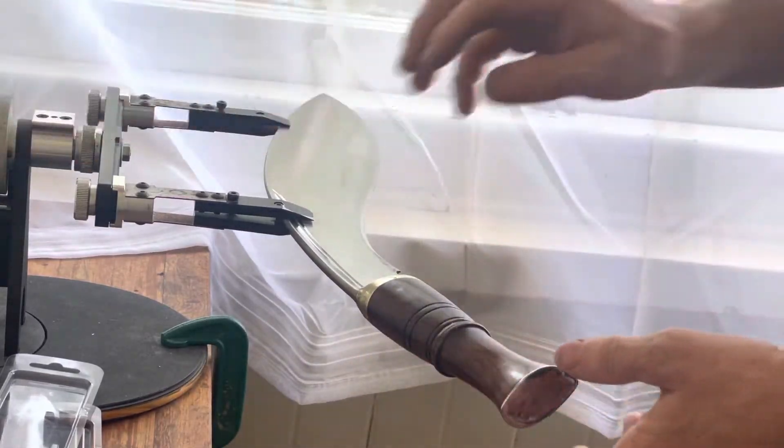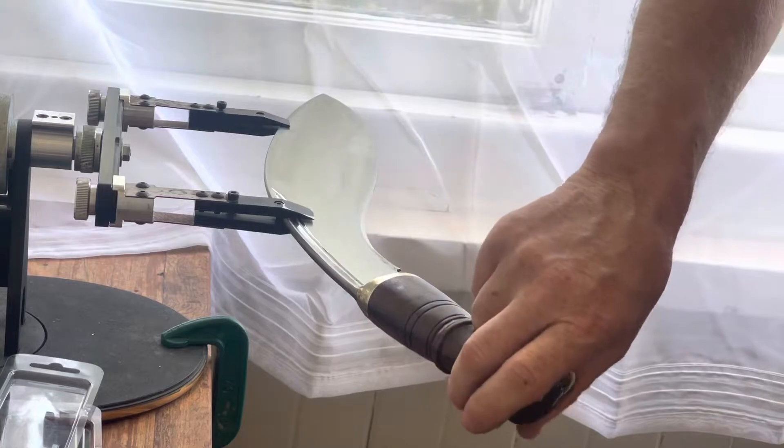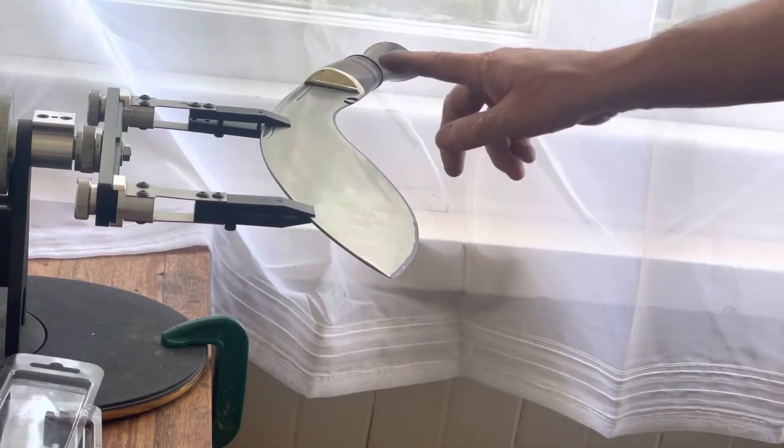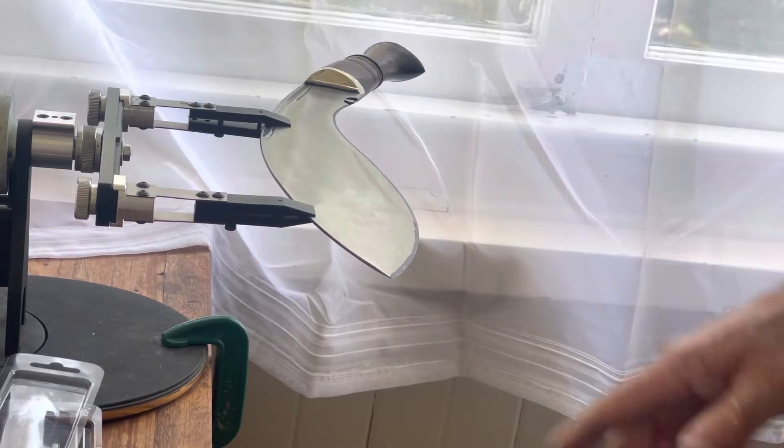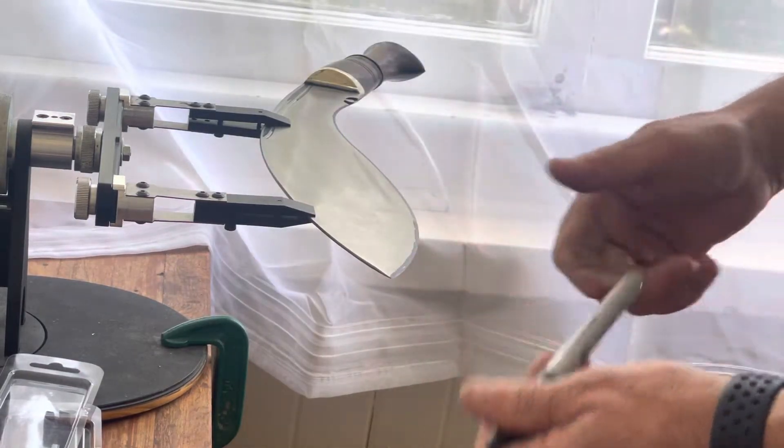When I flip to the other side, you can already see I've put a marker on there - Sharpie, magic marker, whatever you want to call it. A black mark across there.